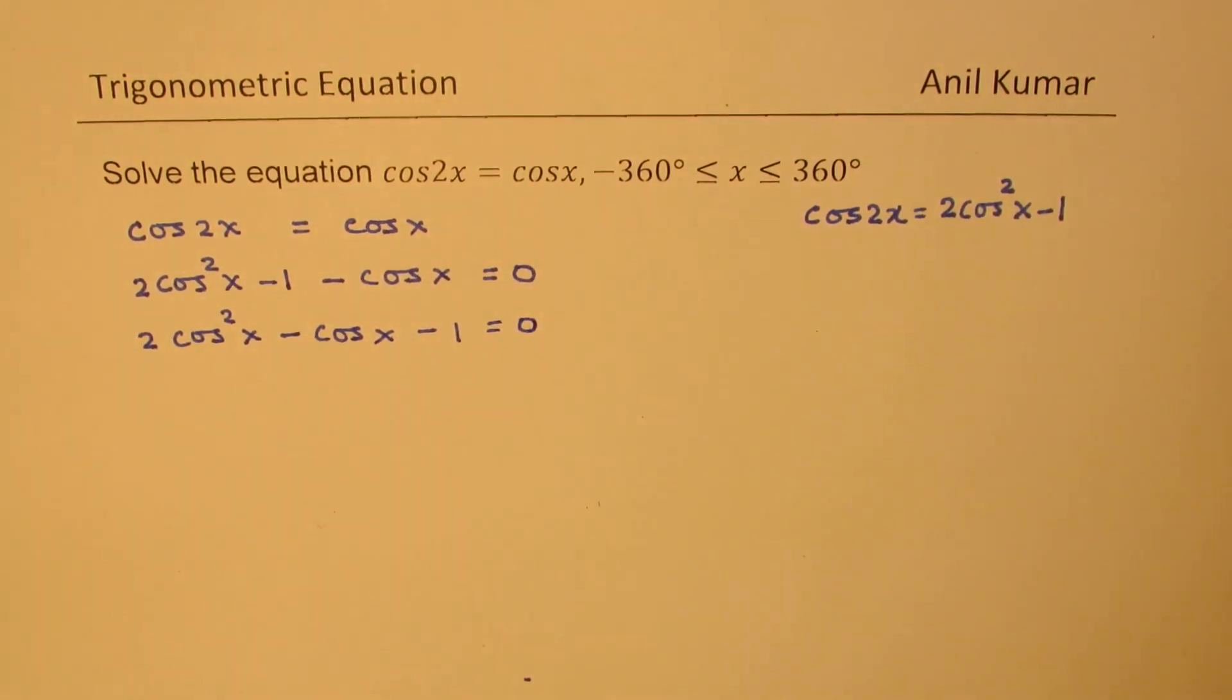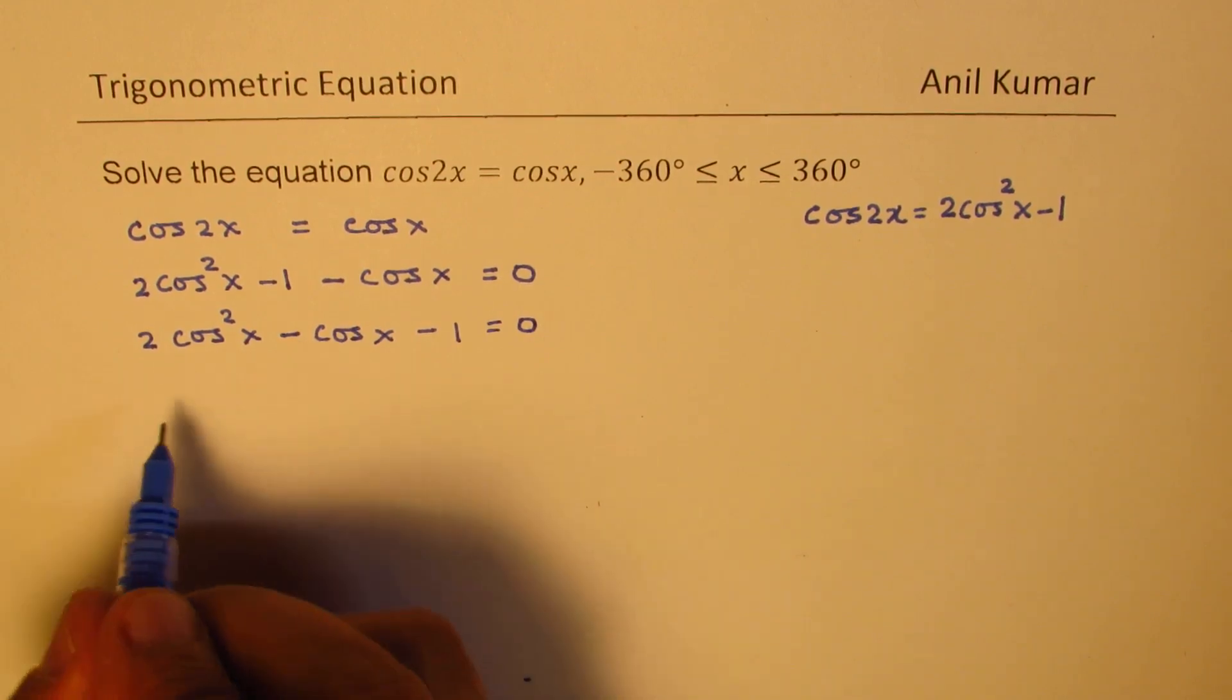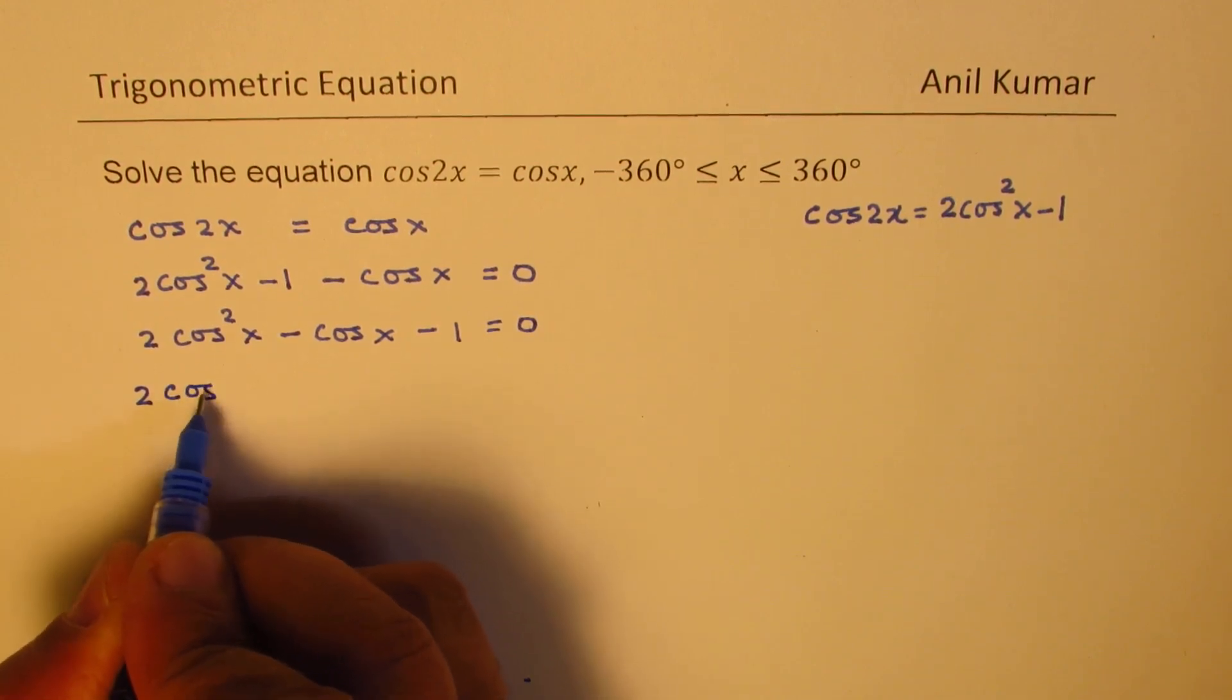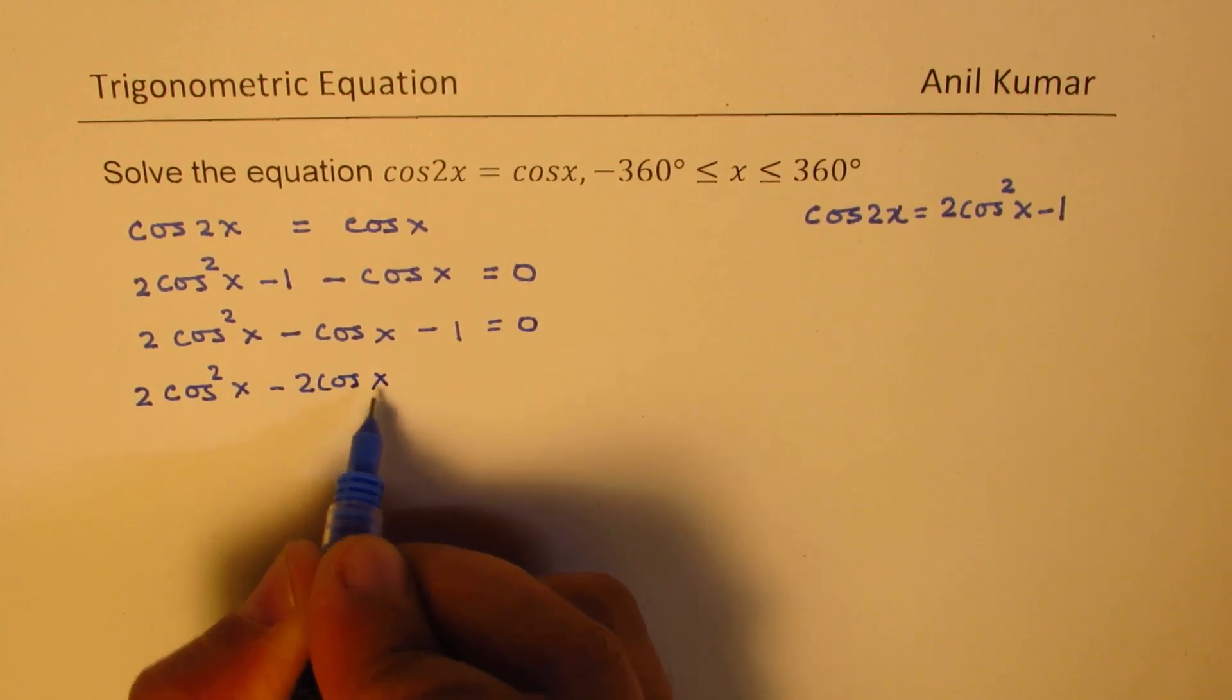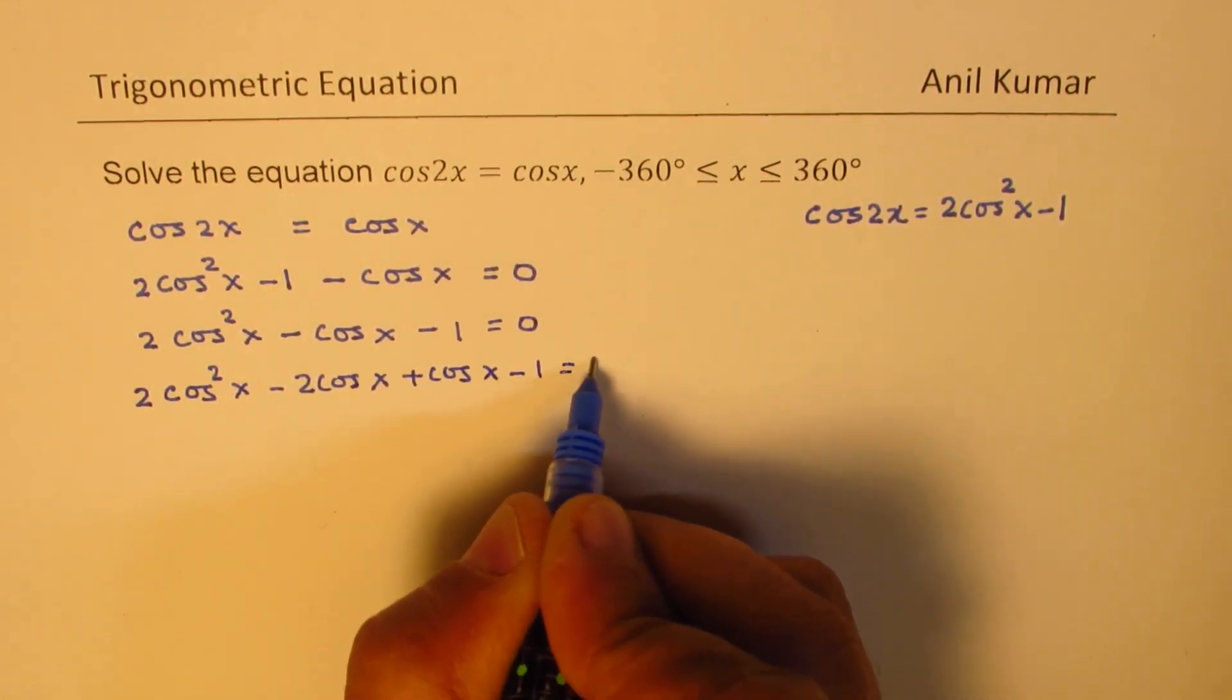To factor, we are looking for product of minus 2, sum of minus 1. So we could split this cos x as 2 cos squared x minus 2 cos x plus cos x minus 1 equals 0.